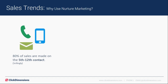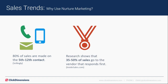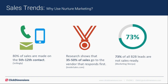Another interesting fact is it's taking a lot more contacts or impressions to get individuals across the finish line. Research shows 80% of sales are made between the 5th and 12th contact — much higher than 5 to 10 years ago. This means more emails and more calls from the sales team. Research also shows 35 to 50% of sales go to the vendor that responds first. And nearly 73% of B2B leads are not yet sales ready.